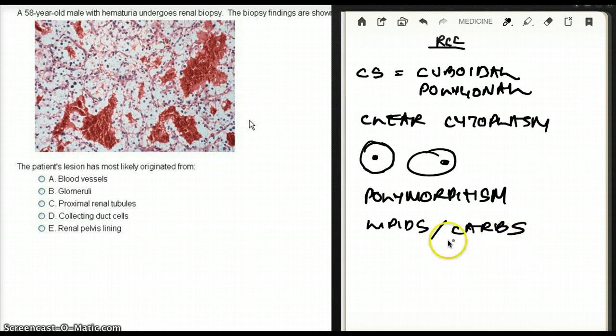Some of the manifestations the patient is going to have is that they are going to have hematuria, which this patient had. We are going to see painless hematuria. Painless hematuria is usually seen in renal cell carcinoma and also transitional cell carcinoma of the bladder.